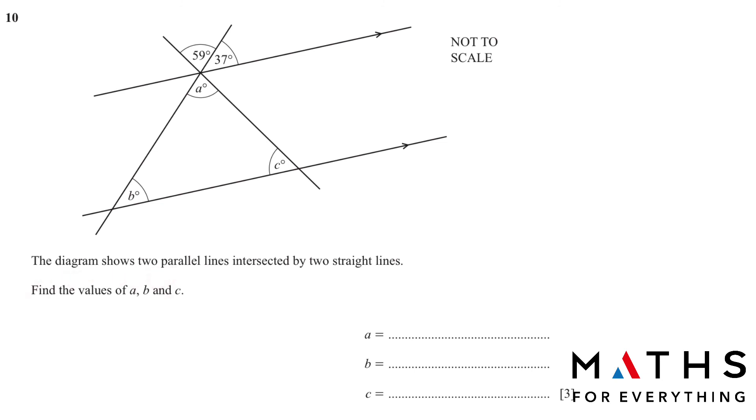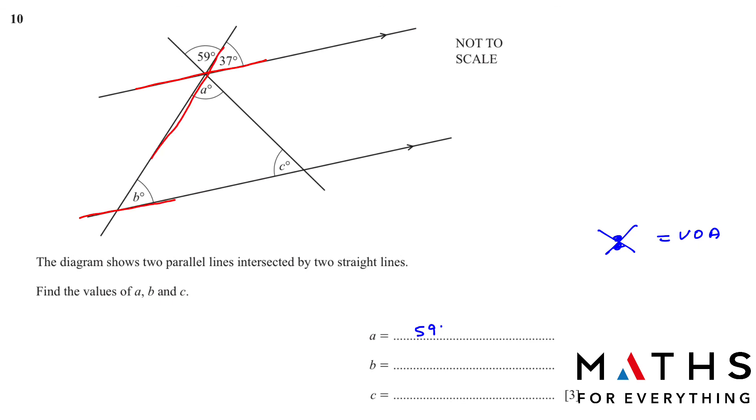Moving on to the next question. The diagram shows two parallel lines. These are the two parallel lines. And we have to find the values of angle A, B and C. I hope you are aware of all the angle rules. To find A: A is equal to 59 because vertically opposite angles are equal. Next, you want to find B. Look carefully at this is the parallel line and this is the parallel line. There is one line cutting like that. So this is like an F. Whenever you have an F like this, the outside angle and the inside angle are the same. So 37 is equal to B. What is the reason? Corresponding angles are equal to each other.